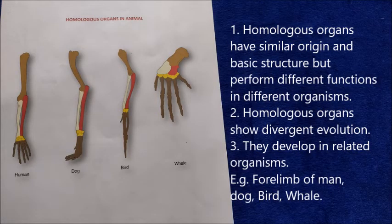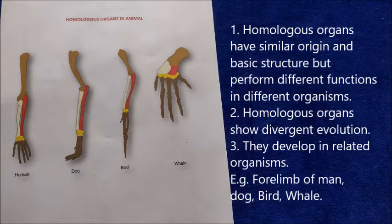In animals also there is homology. For example, the forelimbs of man, dog, bird, and whale are homologous organs. In all these cases, forelimbs have the same basic structural plan and origin, but in all the cases the functions of forelimbs are different.